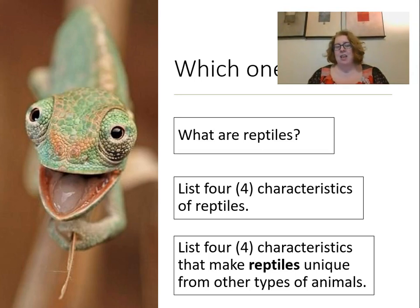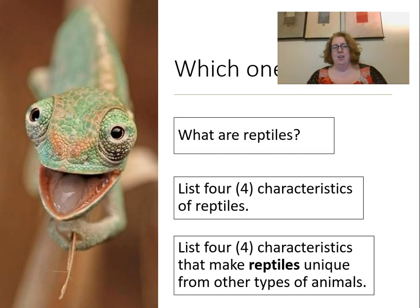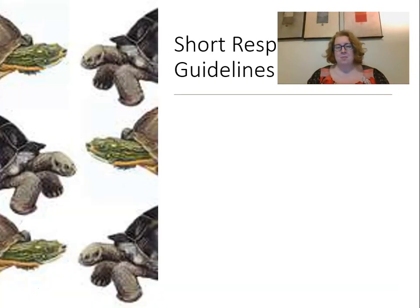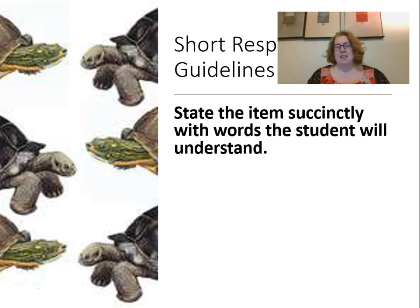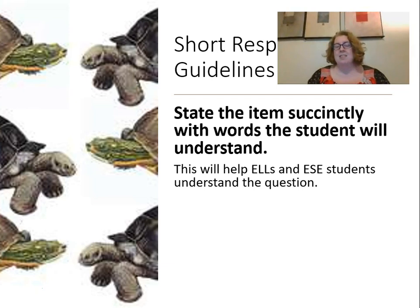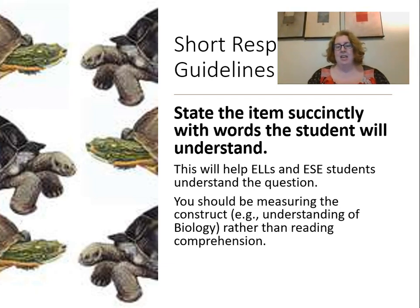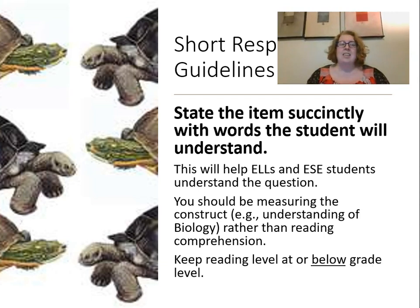Consider which is better: 'What are reptiles?' versus 'List four characteristics of reptiles' versus 'List four characteristics that make reptiles unique from other types of animals.' The problem with the middle question is that you could say reptiles live on earth, breathe air, and are alive — those are all characteristics, but they're not what makes reptiles unique. State items succinctly with words students will understand, to lessen reading load and measure the construct rather than reading comprehension.